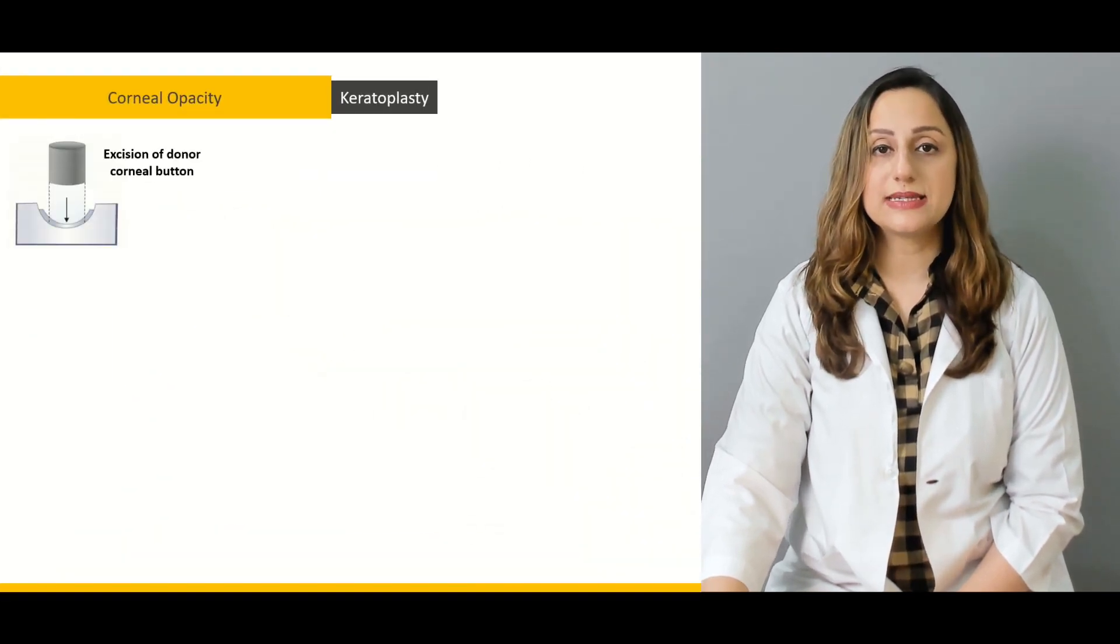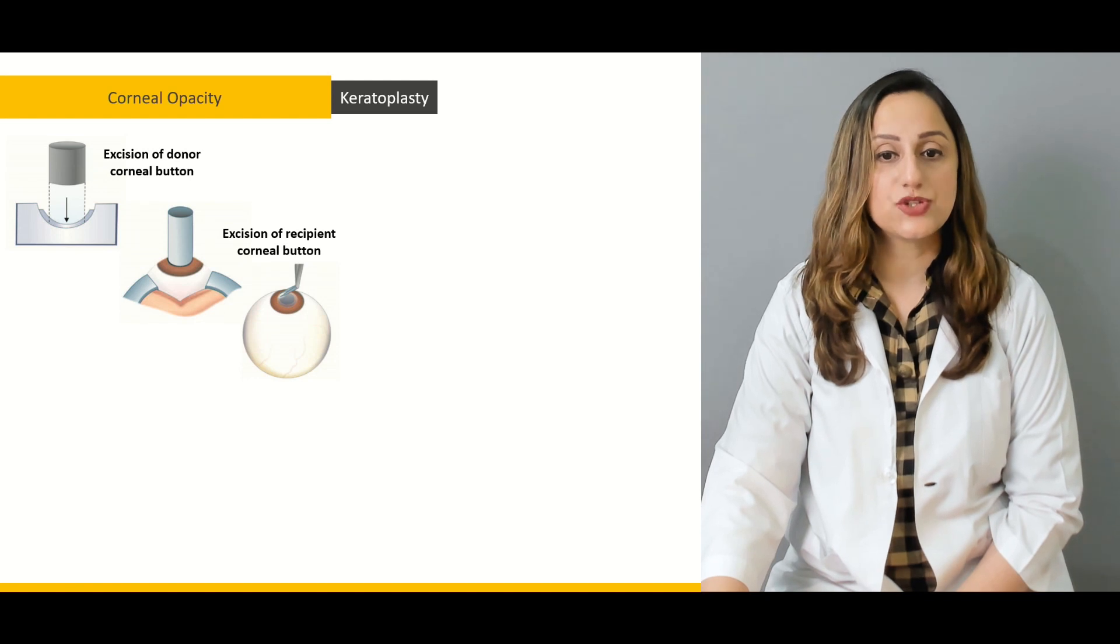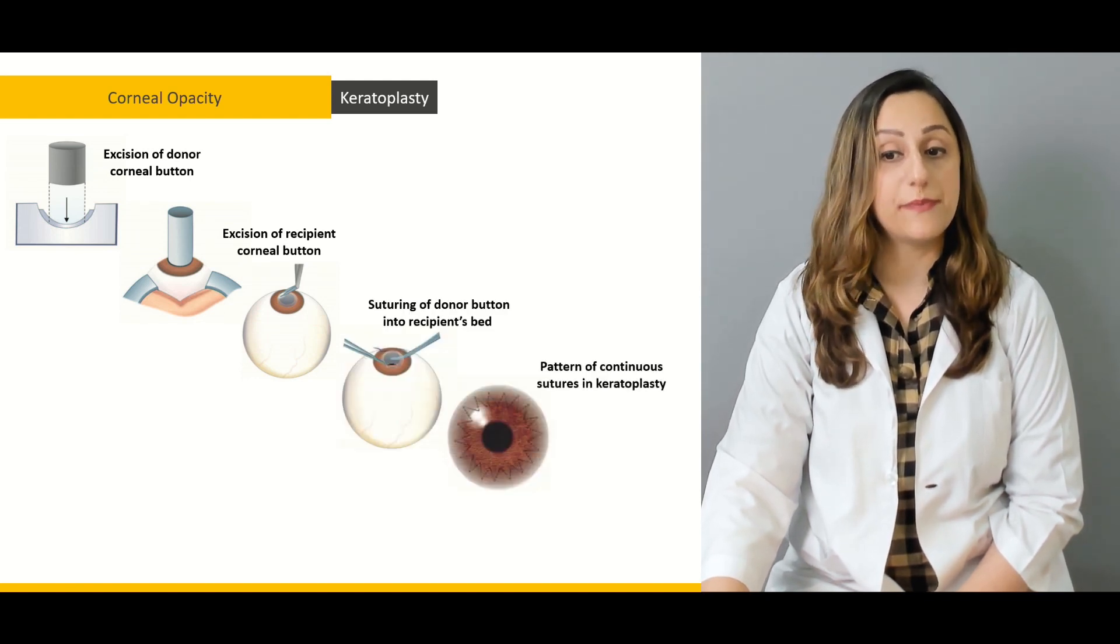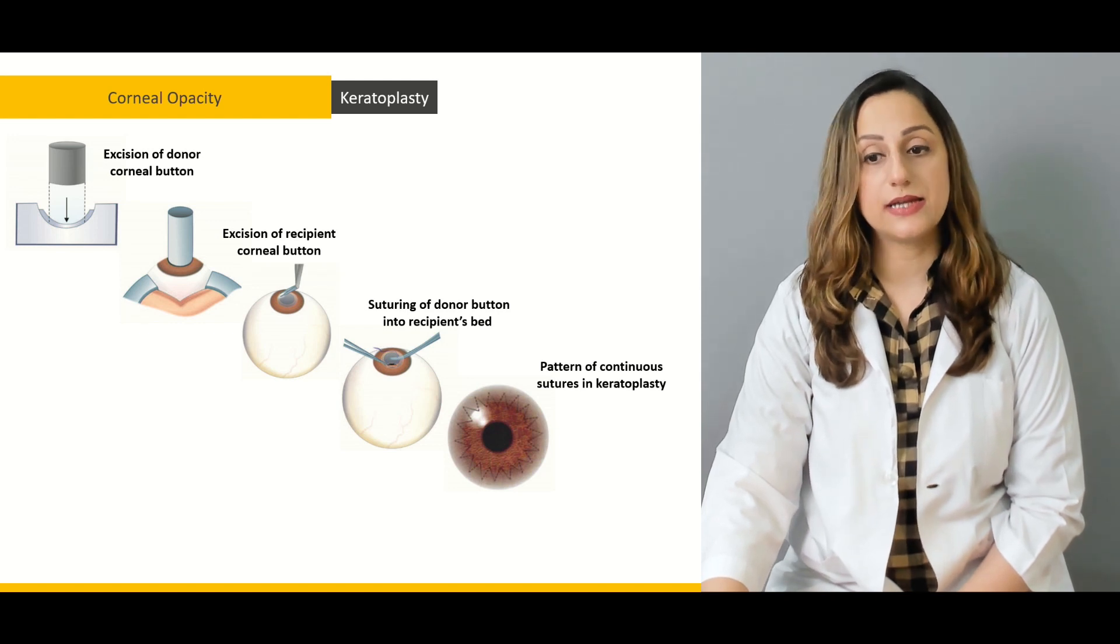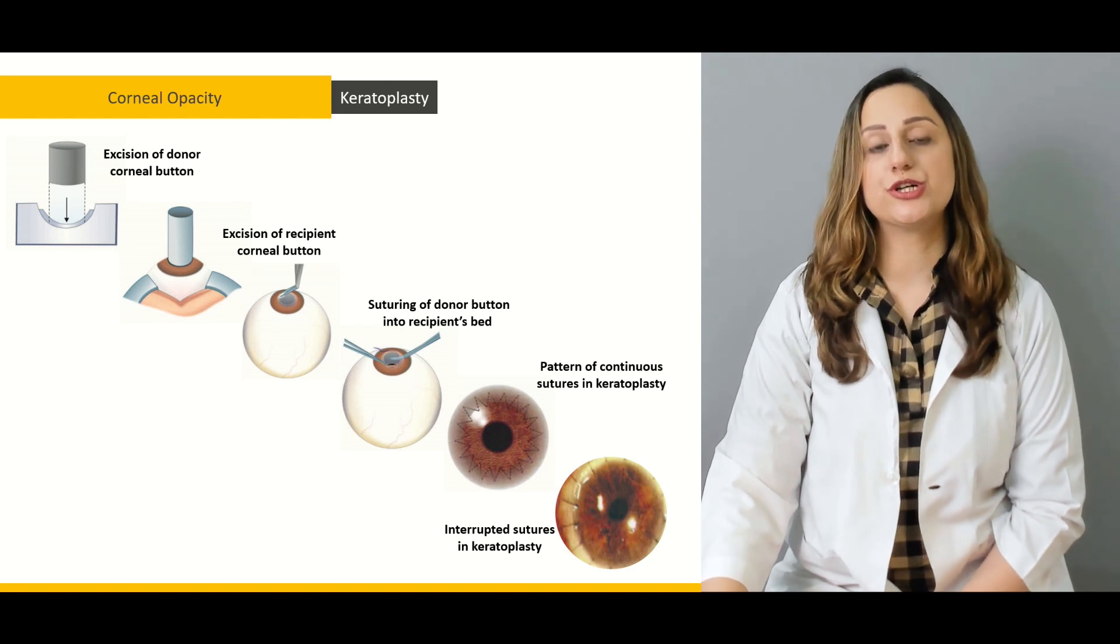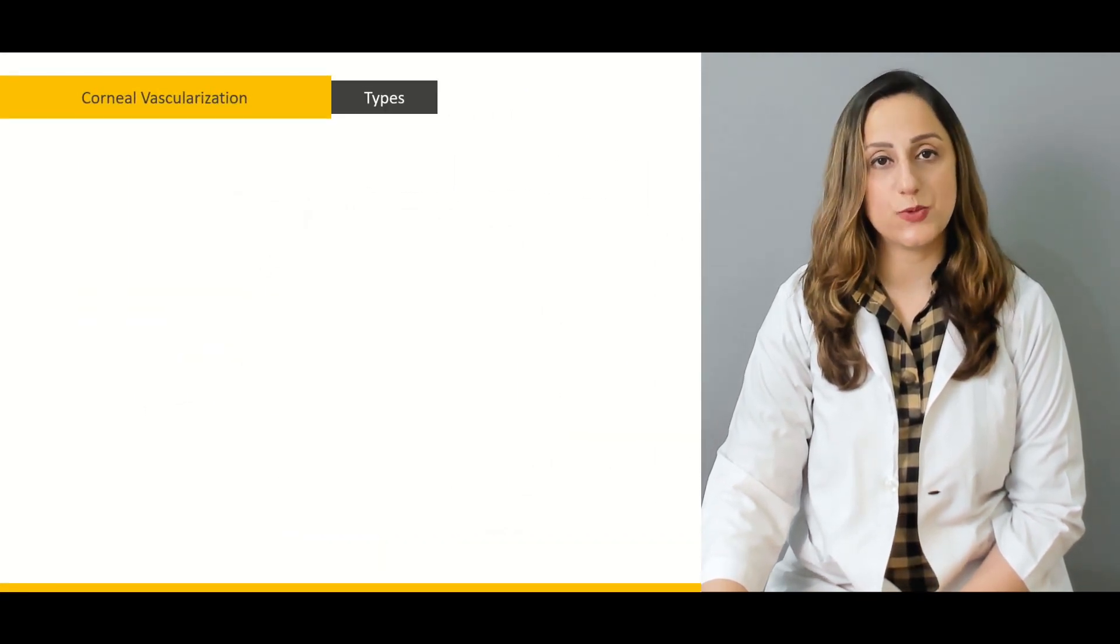The keratoplasty has a step-by-step procedure in which we have a corneal button placed in the recipient's bed, giving out a pattern of continuous sutures in the keratoplasty, or we can also revert to interrupted sutures as well.